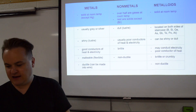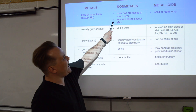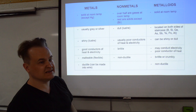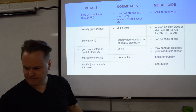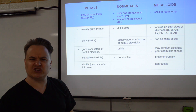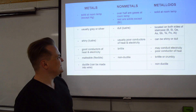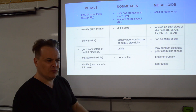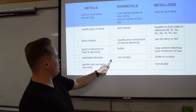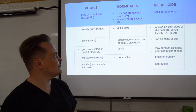Now let's look at non-metals. Over half of them are gases at room temperature; the rest are solids except bromine. Non-metals are normally dull — they don't have a lot of luster or shine. They're usually very poor conductors. They're normally brittle, which means they break very easily. They're non-ductile — you can't turn a non-metal into a wire.